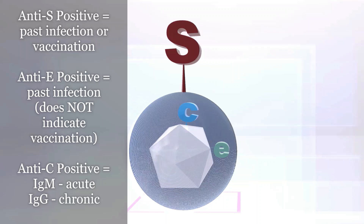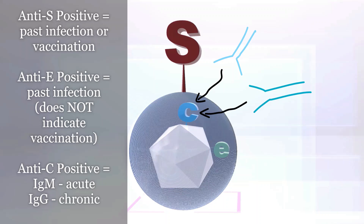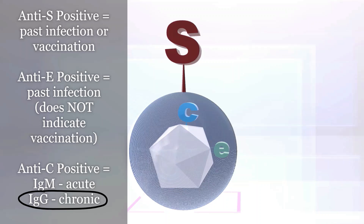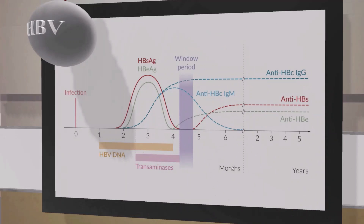The core antibody is really important because it helps distinguish between acute and chronic Hepatitis B infection. There are two versions directed against the c antigen: the IgM version and the IgG version. IgG tends to come later and lingers for a longer time. If a patient is positive for the IgM c antibody, they have the acute form. If positive for the IgG version, that means they have a chronic infection.